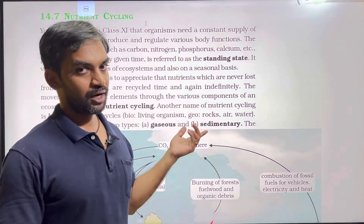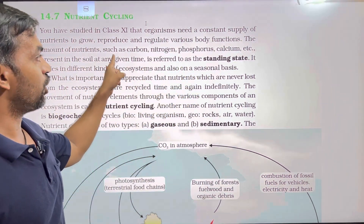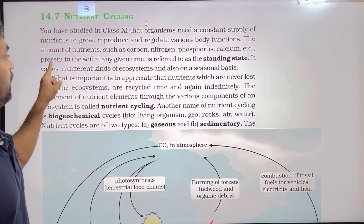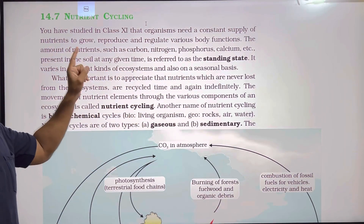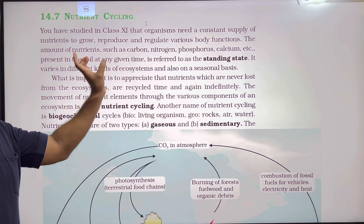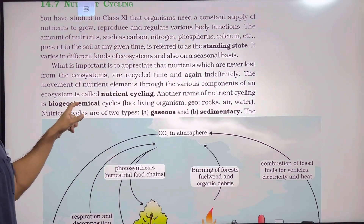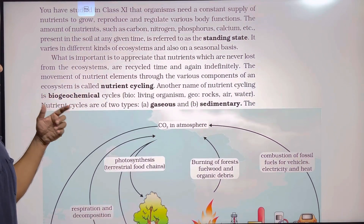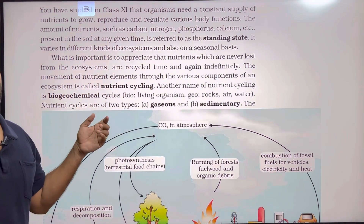Standing state is the amount of inorganic substances — carbon, nitrogen, phosphorus, calcium — present in the soil at a particular time. This varies in different kinds of ecosystems and also on a seasonal basis.